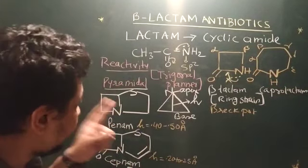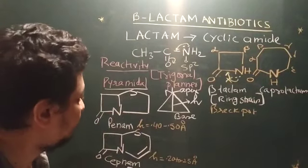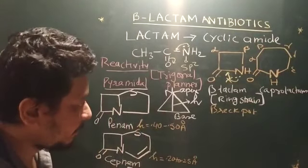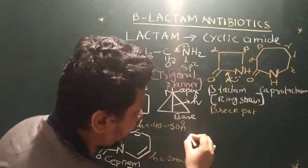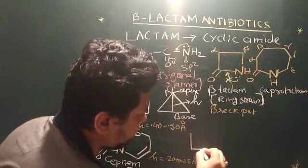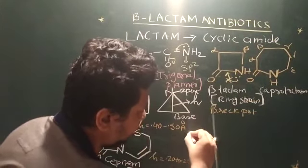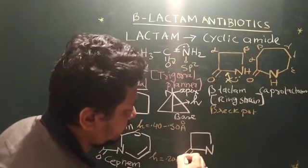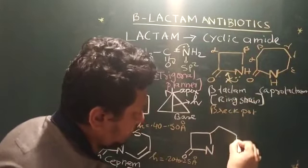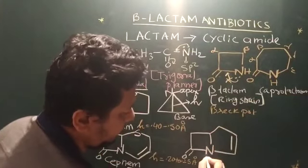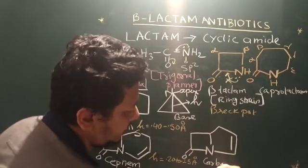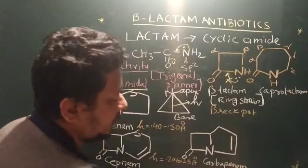Then, if I replace sulfur with a carbon, then penem become carbapenem. So, we have carbapenem structure. This is carbapenem. If we add double bond, it become carbapenem.